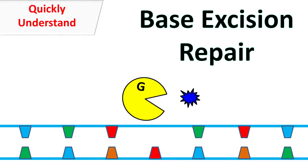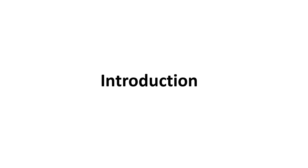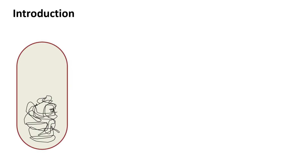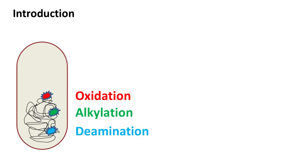Hey guys, QuickBuck Chemistry Basics here. Let's talk about base excision repair. Besides UV radiation, the nitrogenous base of DNA can be damaged by a variety of mechanisms such as oxidation, alkylation, and deamination. The presence of these modified bases results in incorrect base pairing and mutations in the DNA. Hence, it becomes necessary for the cell to remove such chemically modified bases, which is done by the mechanism of base excision repair.